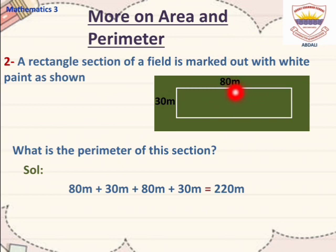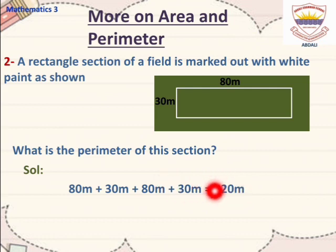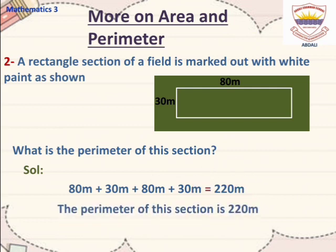The parallel length of the rectangle is also 80m, and the parallel breadth is also 30m. We add all the sides: 80 plus 30 plus 80 plus 30, which gives us 220m. The perimeter of this section is 220m.